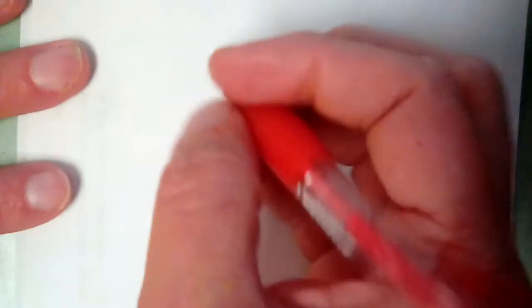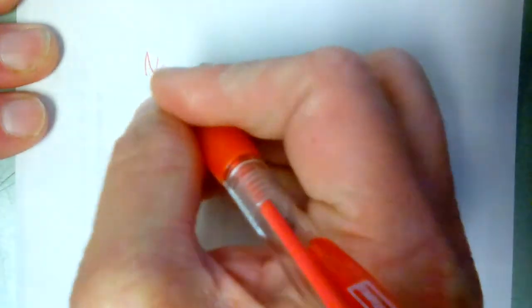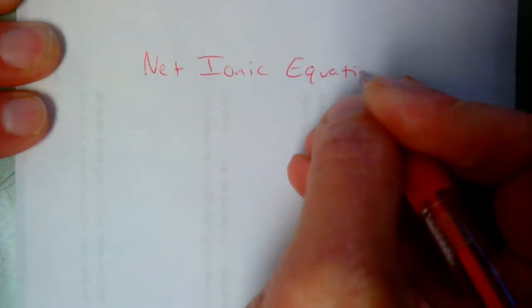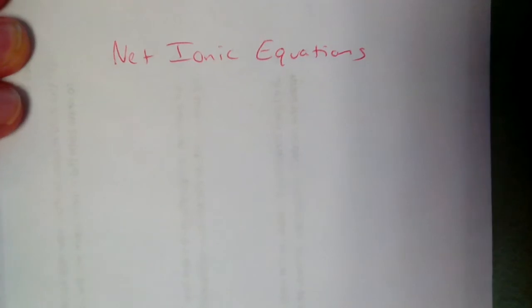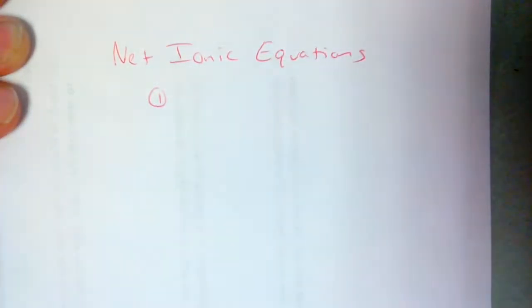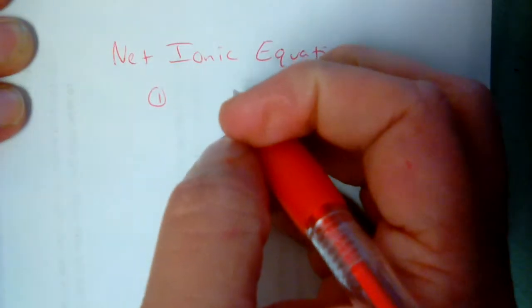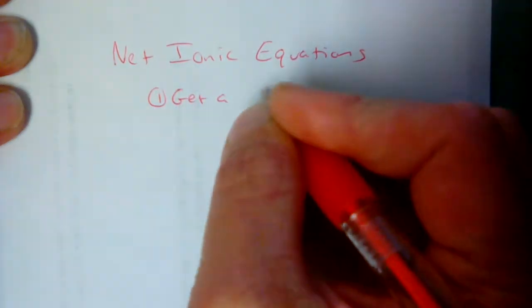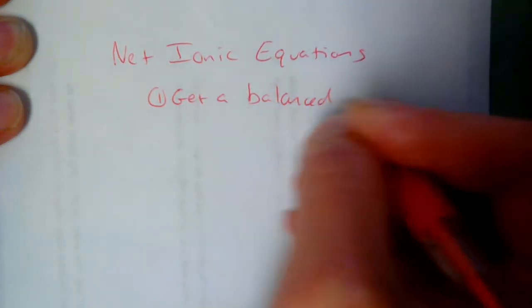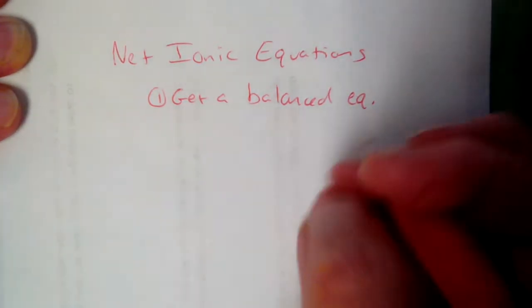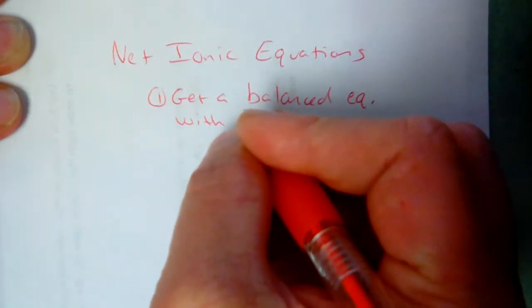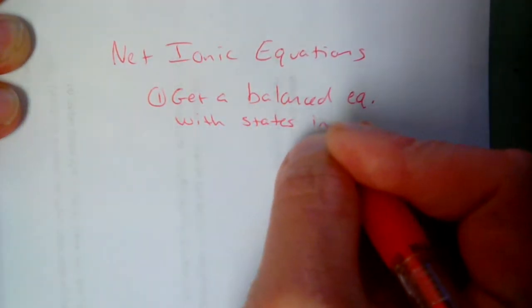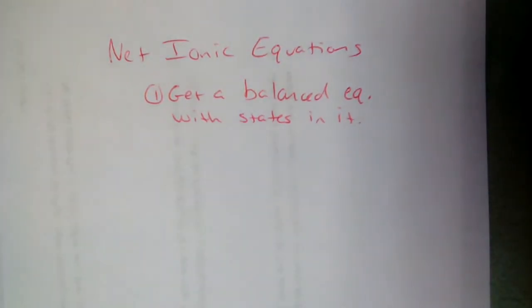There is one last application in this solutions unit: writing net ionic equations. There is a procedure we follow. First, we either write or balance an equation. That balanced equation has to have states in it — solid, liquid, gas, and aqueous.